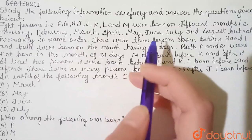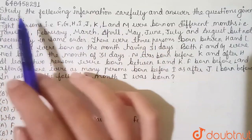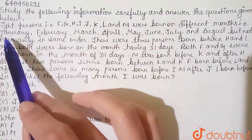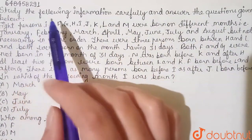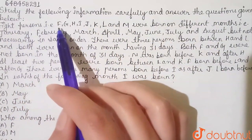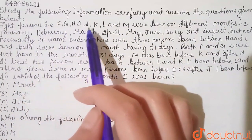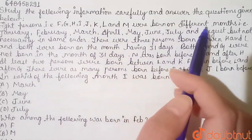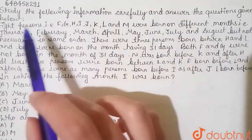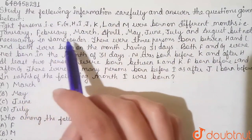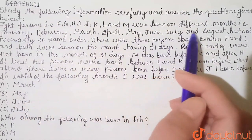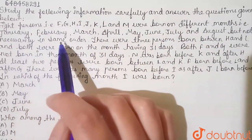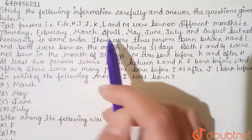The given question is: study the following information carefully and answer the question given below. Eight persons — F, G, H, I, J, K, L, and M — were born on different months, that is January, February, March, April, May, June, July, and August, but not necessarily in the same order.